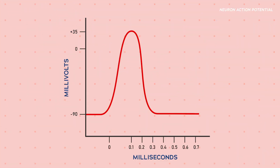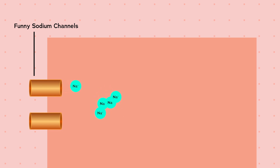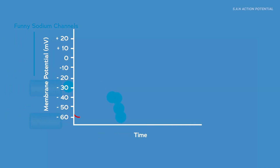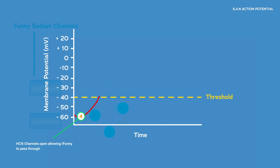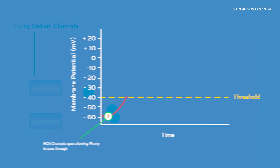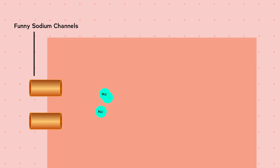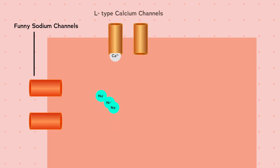Unlike a neuron, which has a stable resting membrane potential of minus 90 millivolts, nodal cells do not have a stable resting potential. At extremely negative potentials, what are known as funny sodium channels, or HCN channels, open spontaneously without any external input from the nervous system, allowing for the slow entry of sodium ions. As soon as minus 60 millivolts is reached, these funny channels open and the membrane potential increases toward the threshold potential.